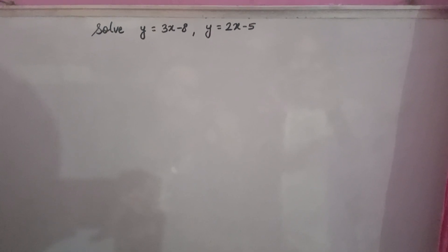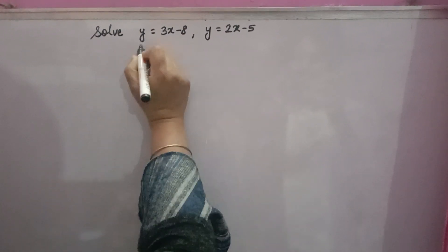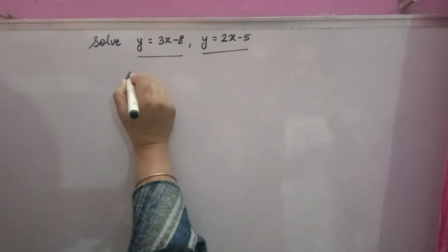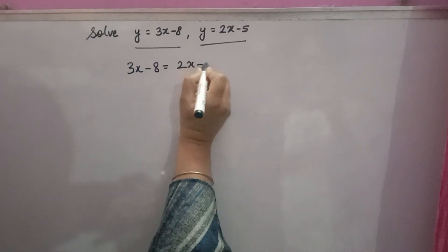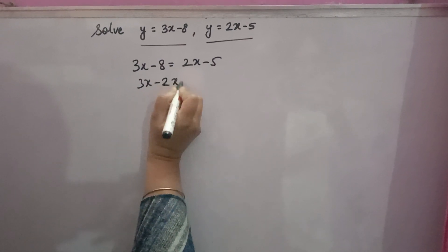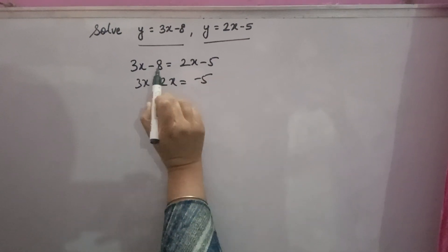3x minus 8, y is equal to 2x minus 5. Both values are of y, therefore you can equate them. 3x minus 8 is equal to 2x minus 5. Now x take one side and numbers take one side.